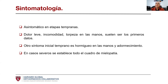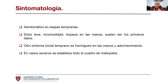En cuanto a la sintomatología, normalmente el paciente llega ya presentando síntomas, salvo que sea un hallazgo de algún estudio llevado a cabo por otras causas. Inicialmente hay un dolor leve, incomodidad y torpeza en las manos, así como en ocasiones hormigueo y adormecimiento. En casos ya severos se lleva a cabo el cuadro de mielopatía. El comportamiento puede ser descendente, y ya cuando afecta a las extremidades inferiores, lo primero que se observa son trastornos de la marcha.